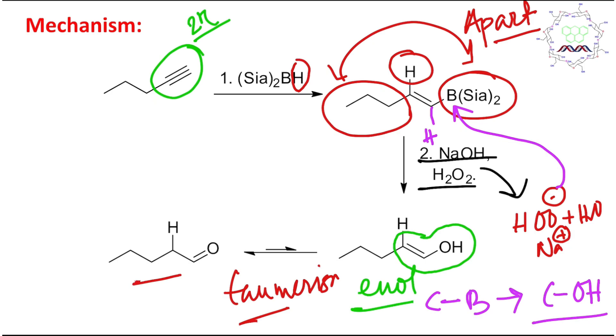This is tautomerism. Its tautomer keto is relatively more stable, and this is actually more specifically an aldehyde. So using this method you can convert alkyne, terminal alkyne, into aldehyde by this (Sia)2BH, even 9-BBN you can also use.